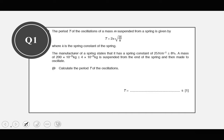Question number one: the period T of the oscillations of a mass m suspended from a spring is given by that expression. The spring constant k is 25 newton per meter plus or minus 8%. The mass is 200 times 10 to the power negative 3 kilograms, plus or minus 4 times 10 to the power negative 3 kilograms, suspended from the end of the spring and made to oscillate.